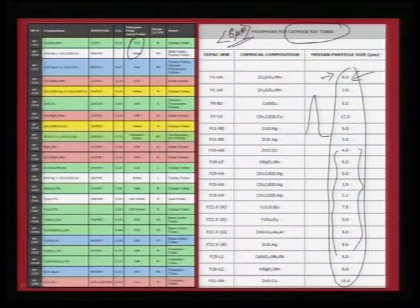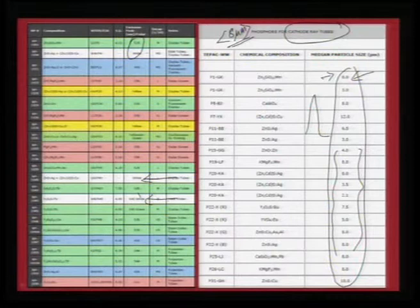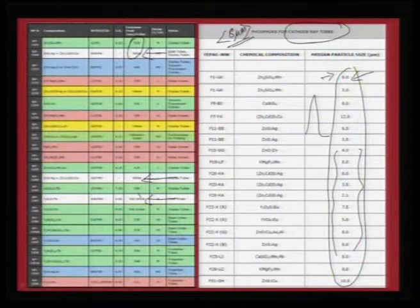If you have an 8-micron particle you should be happy, because that is exactly what is preferred for developing the front panel. Some highlighted candidates in the table are for getting white light phosphors — for example a mixture of zinc sulphide doped with silver and zinc cadmium sulphide doped with copper gives white light phosphors.